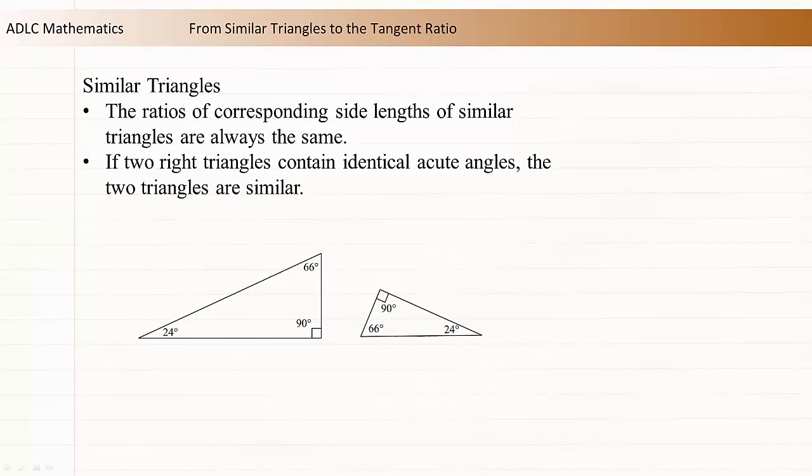Both triangles include the same angles, so they must be similar. If you know one acute angle of a right triangle, the other value can always be determined. So if two right triangles include the same acute angle, they must both include the same three angles and be similar.